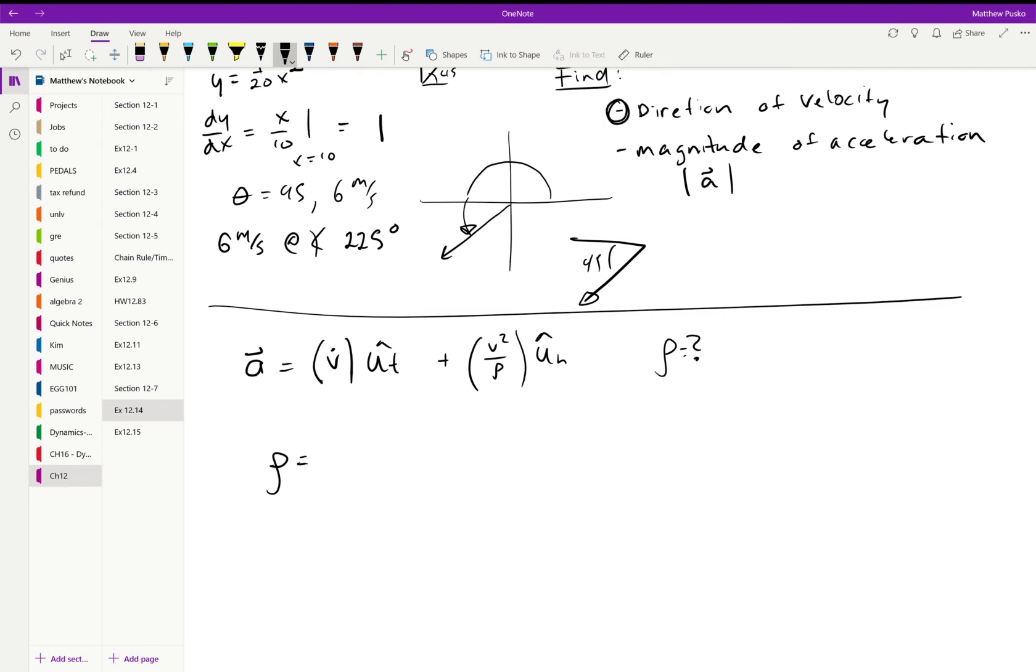We're given the function y equals x squared over 20. So let's take the derivative. y prime would be x over 10, and y double prime would be just 1/10th.